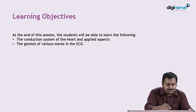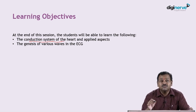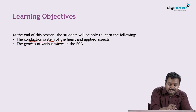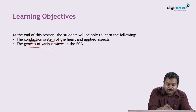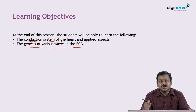At the end of this session we are going to achieve the following learning objectives. The first one: we are going to understand the conduction system of the heart, how these waves are going to be formed and why these waves are formed. Then we will understand how these waves propagate and how they produce the waves on the ECG.